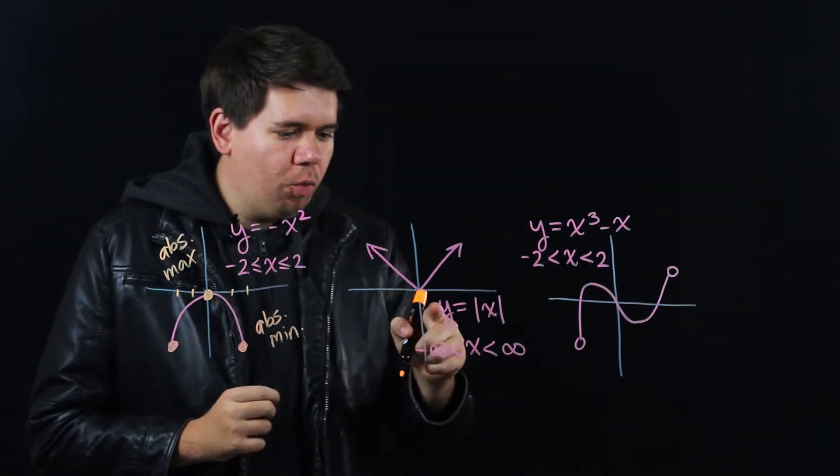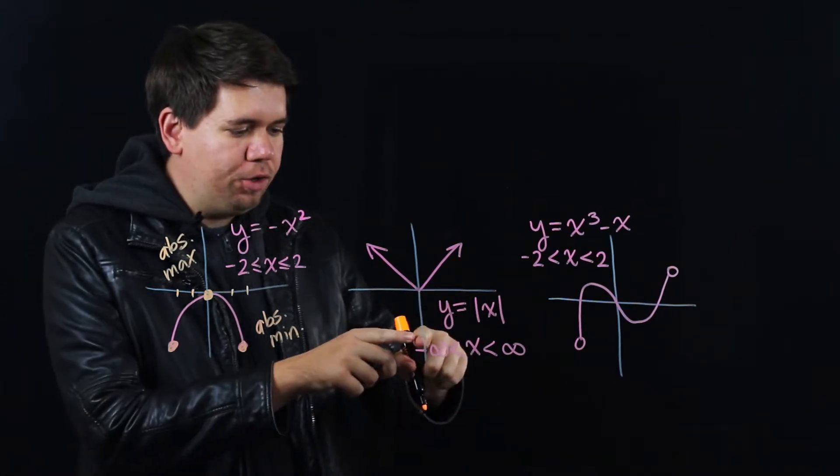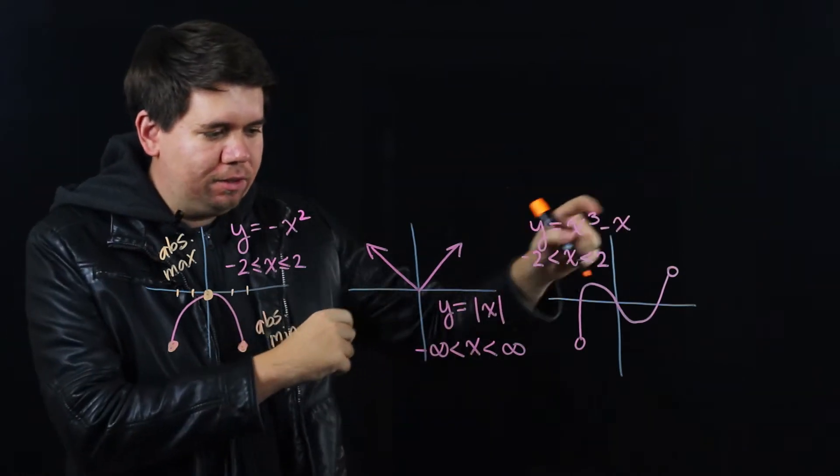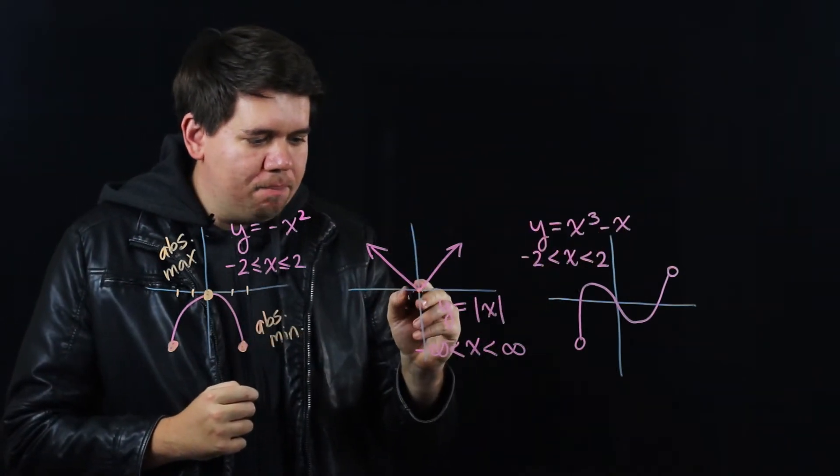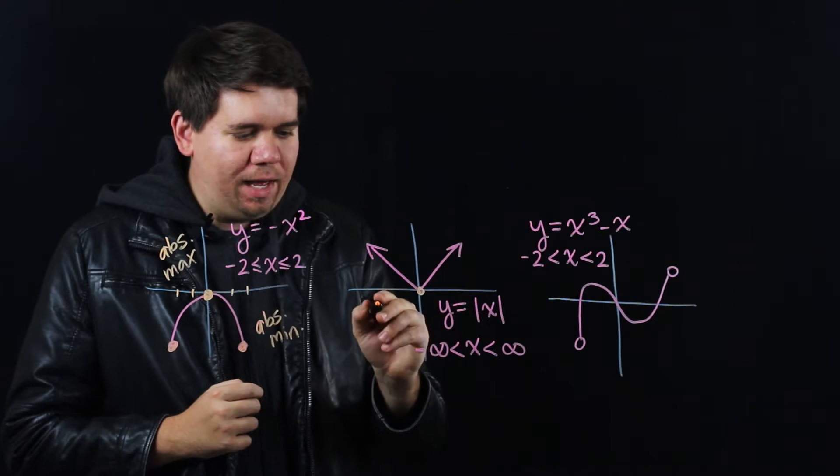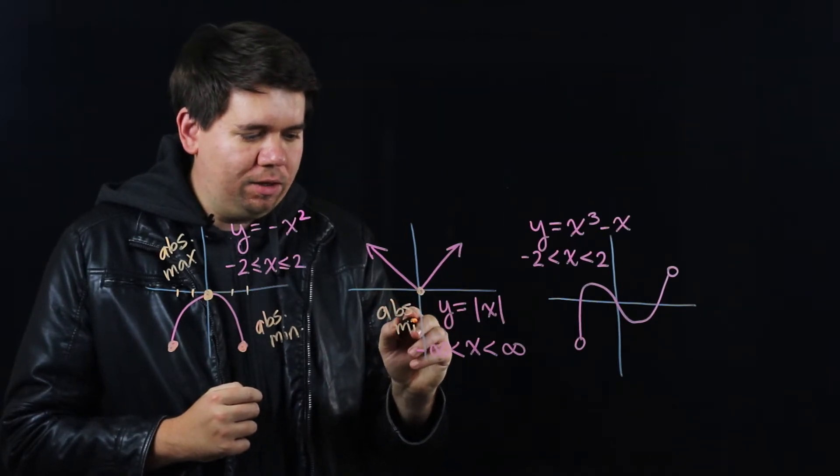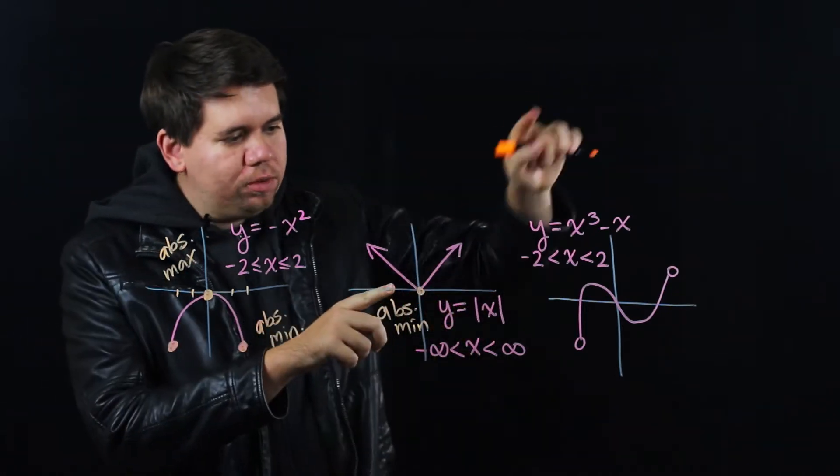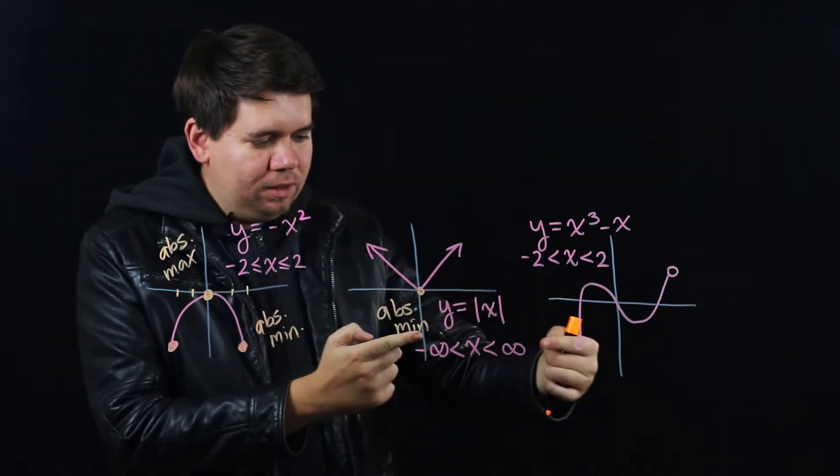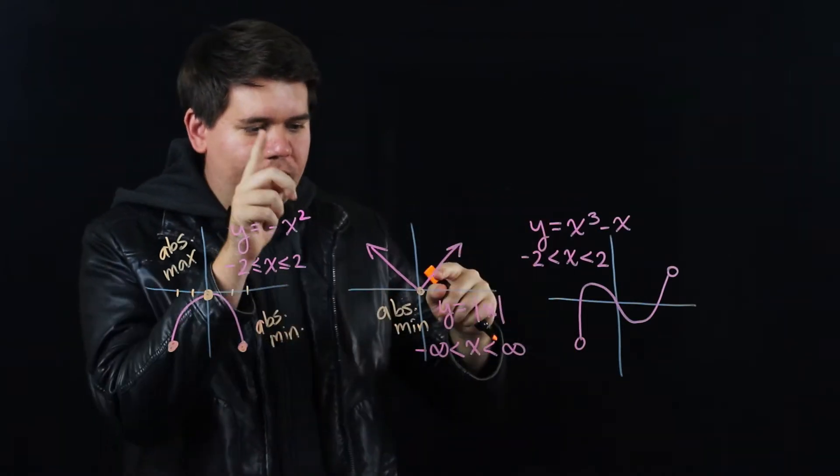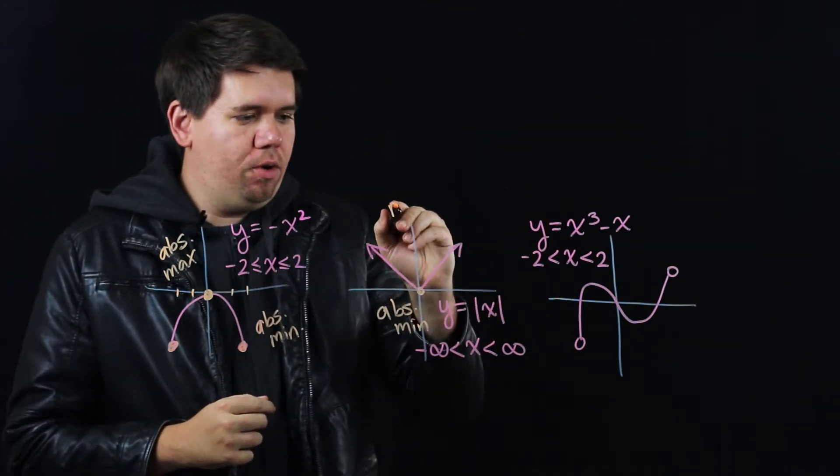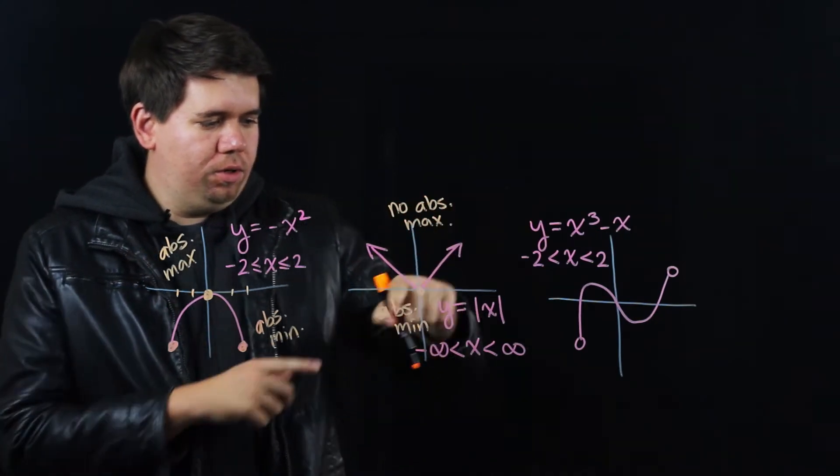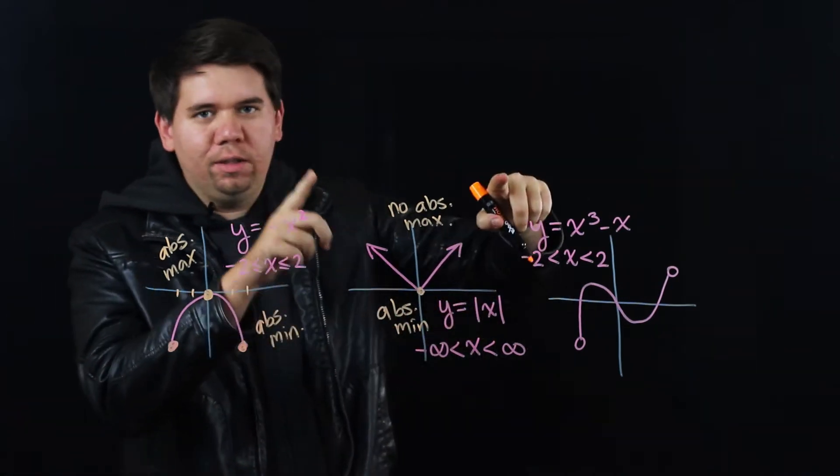How about this graph here? y equals the absolute value of x defined over all of the real numbers from negative infinity to positive infinity. Clearly you have a minimum right here again at 0. You have an absolute minimum at x equals 0. But here you have no maximum because it goes off forever. Since we didn't specify it to a particular range, we're going to run off forever. This has no absolute maximum.